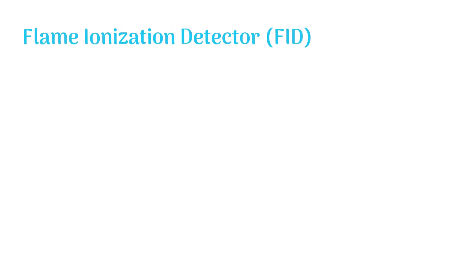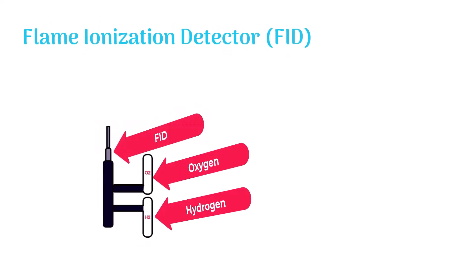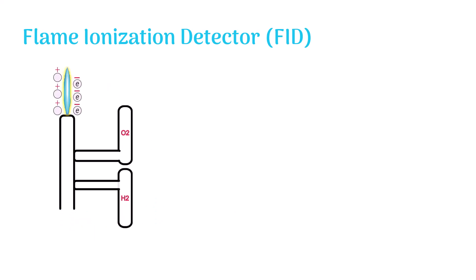The flame ionization detector, FID, has access to hydrogen and oxygen, which it uses to produce a flame. When sample molecules pass through it, they are ignited in the flame and made ionized. The flame is surrounded by electrodes.